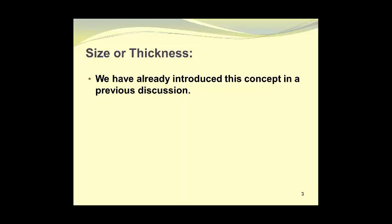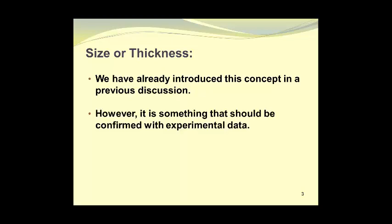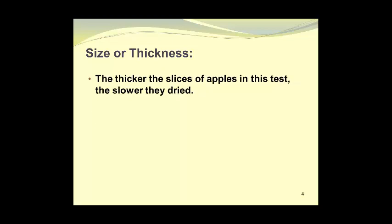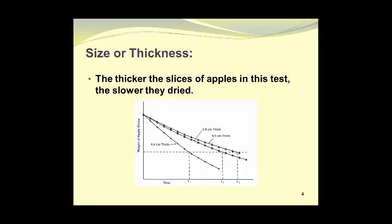We have already introduced the concept of size or thickness in a previous discussion. However, it is something that should be confirmed with experimental data. The thicker the slices of apples in this test, the slower they dried. Here we see a graph plotting the weight of apple slices against time, with three different thicknesses: 0.8 cm (8 mm), 0.6 cm (6 mm, or a quarter of an inch), and 0.4 cm (4 mm).